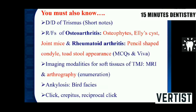Remember these three views. Apart from these, you must also know important terminologies. The differential diagnosis of Chrestien for short notes should be read. For radiographic features of osteoarthritis, remember: osteophytes, subchondral cysts, joint mice. For rheumatoid arthritis, remember pencil-shaped condyle and the toadstool appearance. For imaging modalities, you should know MRI and arthrography. Bird-face appearance is seen in ankylosis. Know what is click, crepitus, and reciprocal click — for example, reciprocal click is seen in anterior disc displacement with reduction. Also know the examination of TMJ and muscles of mastication.